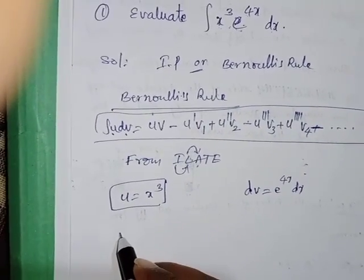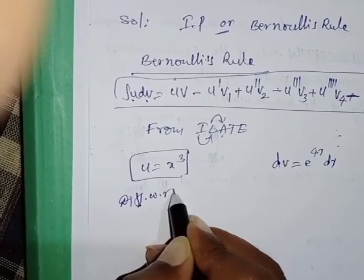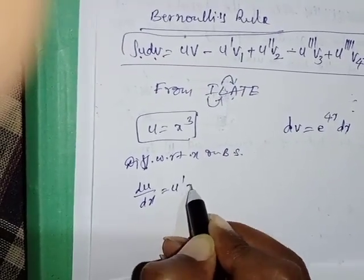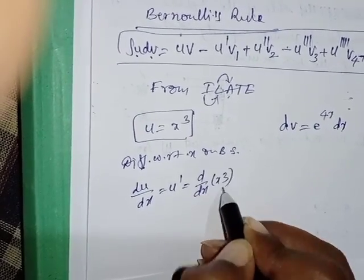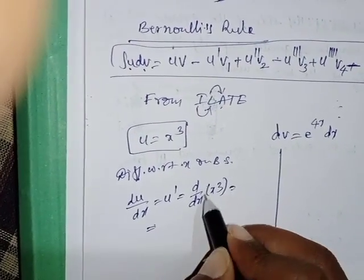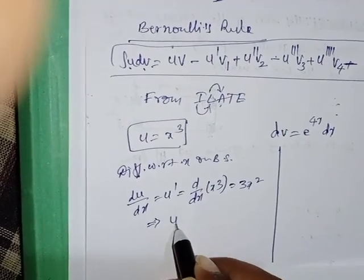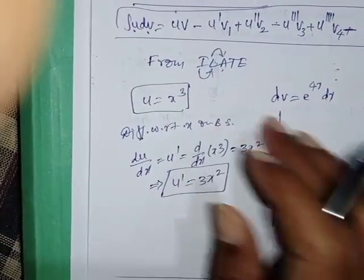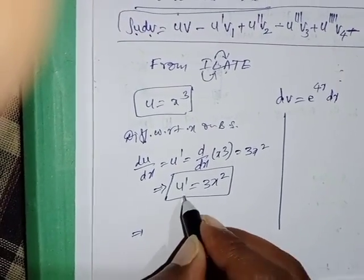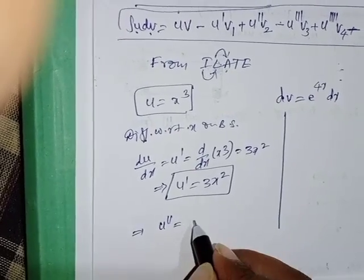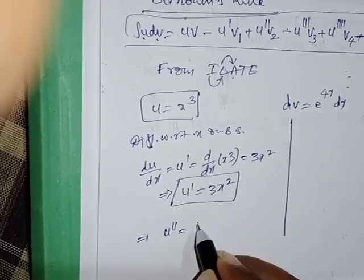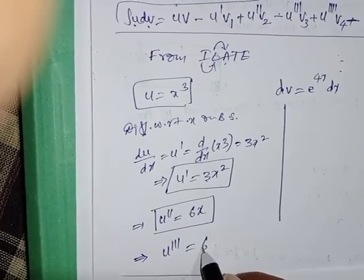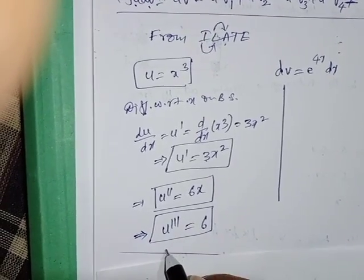The next value automatically is dv = e^(4x) dx. Now differentiate u. u' = d/dx of x³ = 3x². Differentiating again, u'' = 6x. Differentiating once more, u''' = 6. Since 6 is a constant, there is no need to differentiate further.